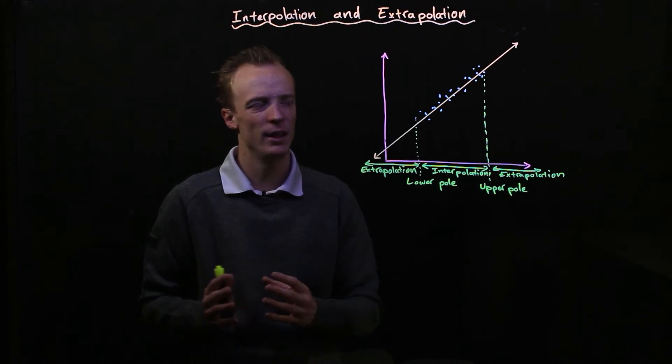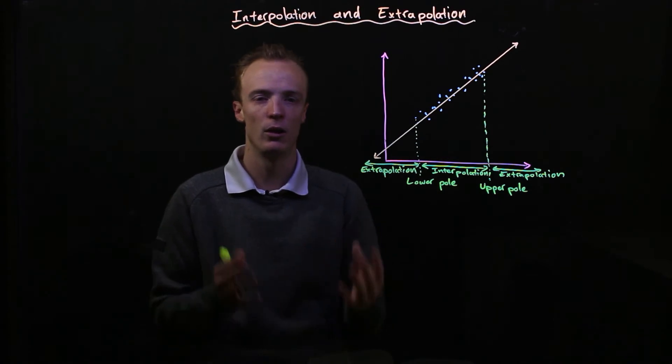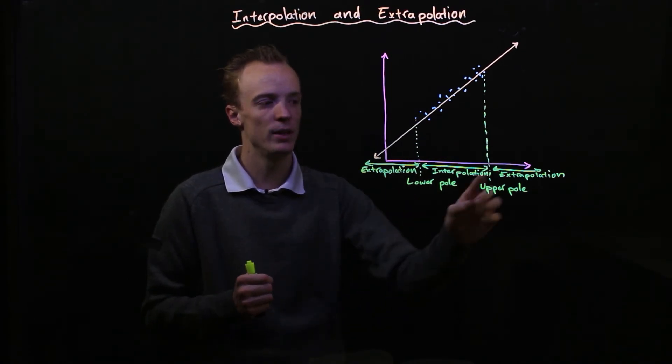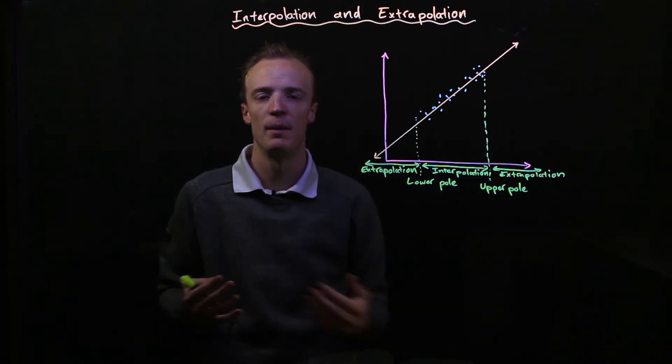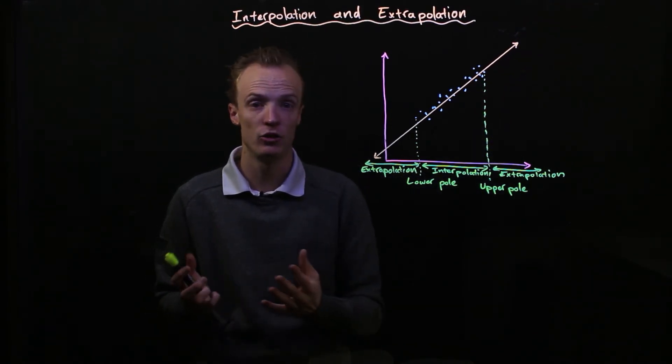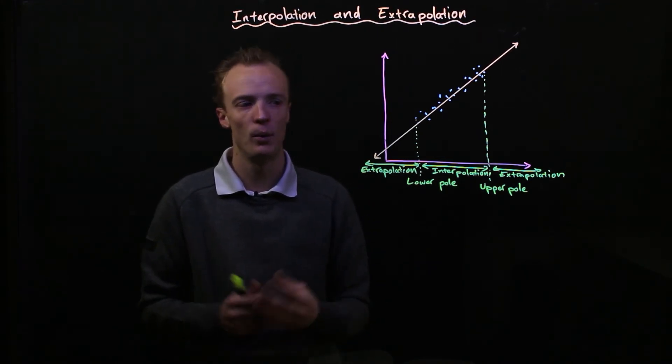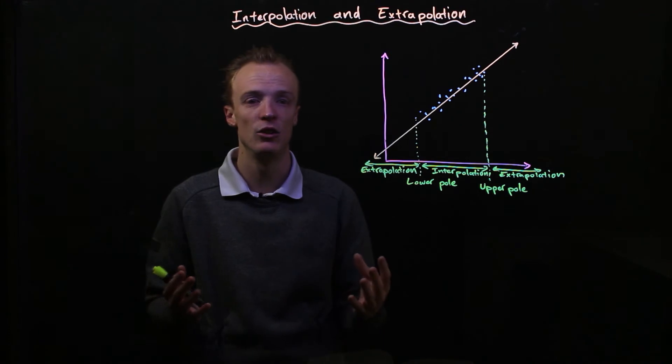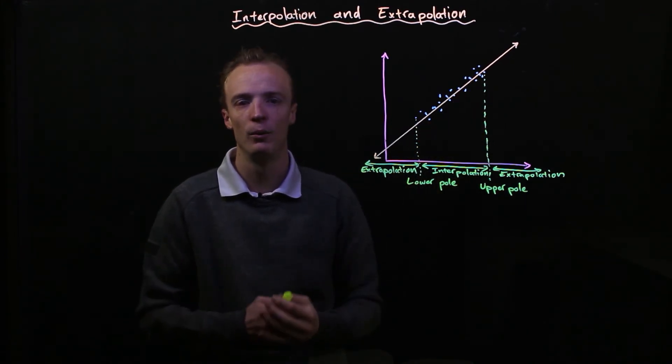The reason for that is because we know that that line does fit the data that we've got. What we're assuming with extrapolation is the trend is going to continue in the same way. Now sometimes the trend definitely does so extrapolation can be very accurate but there are also times where that trend doesn't continue in that same way outside of the two poles of data that we've got.